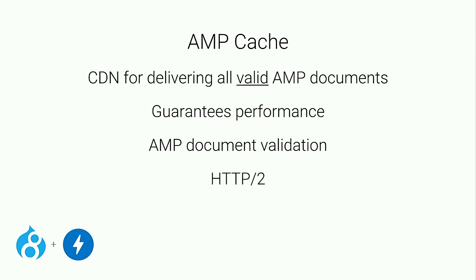The AMP cache also goes above and beyond because it is all HTTP/2, and it leverages the performance characteristics of HTTP/2 such as header compression. If you haven't implemented HTTP/2, as long as you are delivering an AMP document that can be cached by the AMP cache, you can get HTTP/2 benefits without doing anything to your existing infrastructure. And here's the best part — it's free.